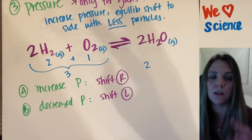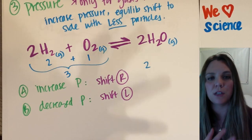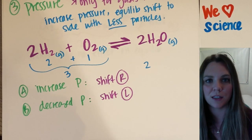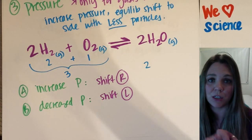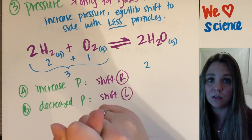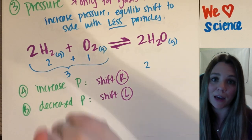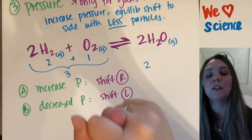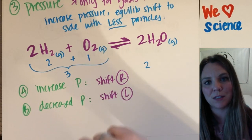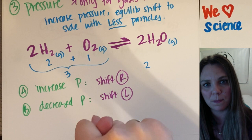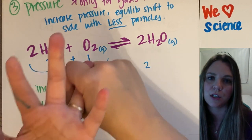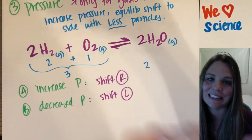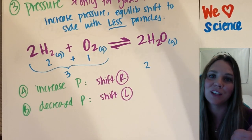Three main ways to shift your equilibrium — Le Chatelier's principle: I can change the concentration of either reactants or products, I can increase or decrease the temperature, and I can change the pressure. That's it. Good luck.